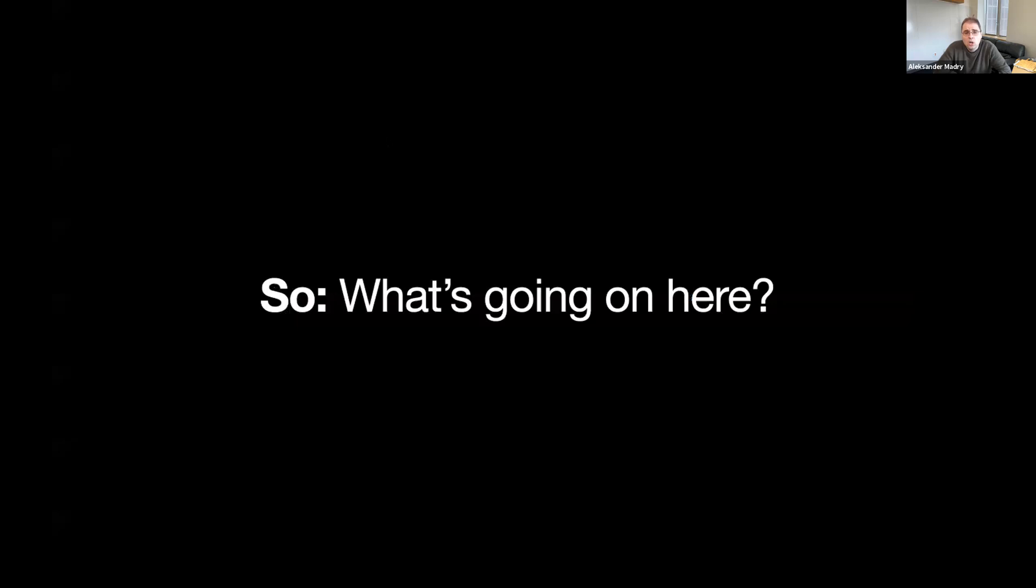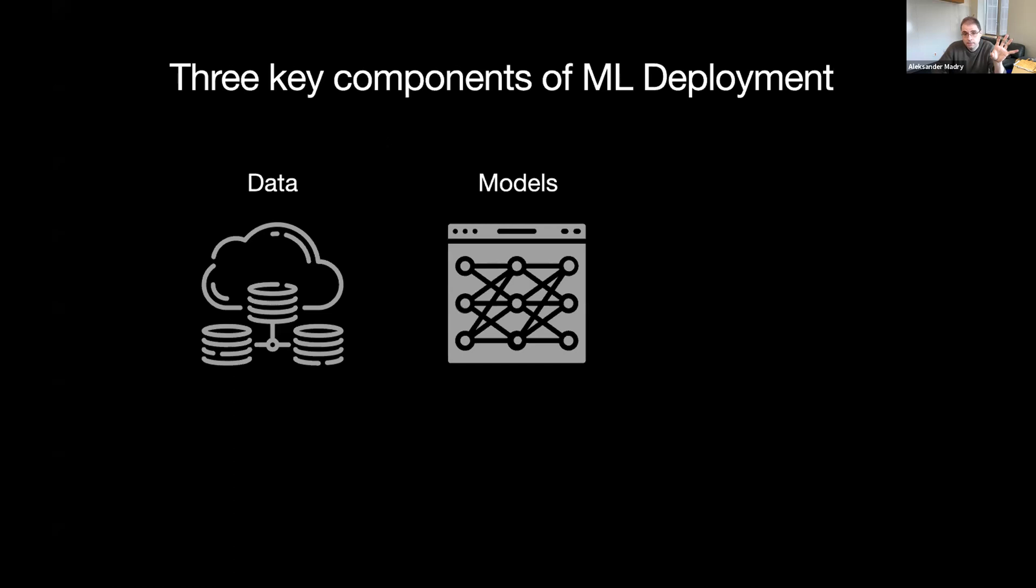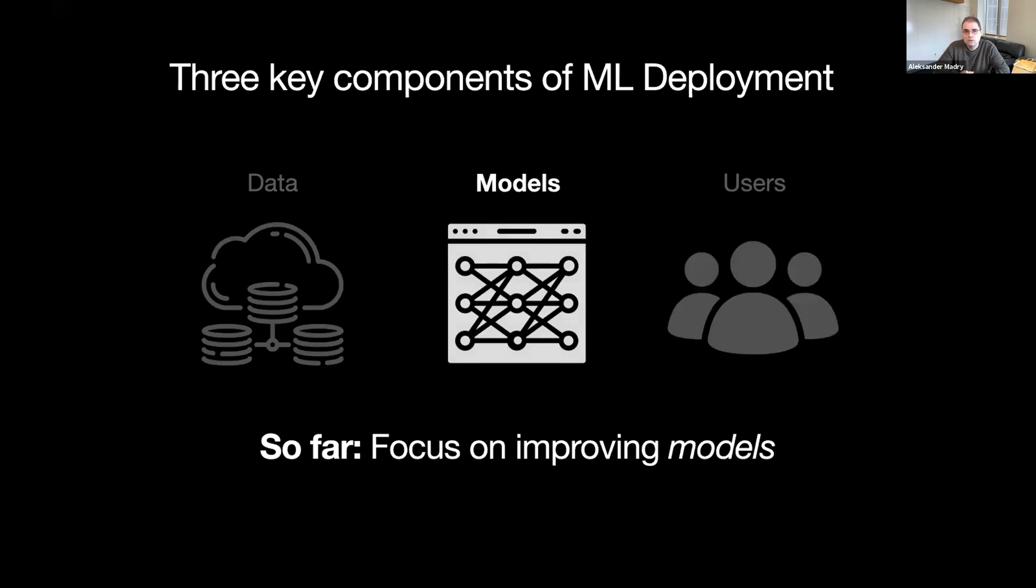So the obvious question is: what's going on here? It was supposed to be so great. So why is it not great yet? The key point of start of trying to provide some answers here is to realize that when we think about ML, we should really keep in mind the whole pipeline there. This pipeline, somewhat simplified, involves data, then it involves model training models on data, and that's what we usually think of as ML, but it also involves users.